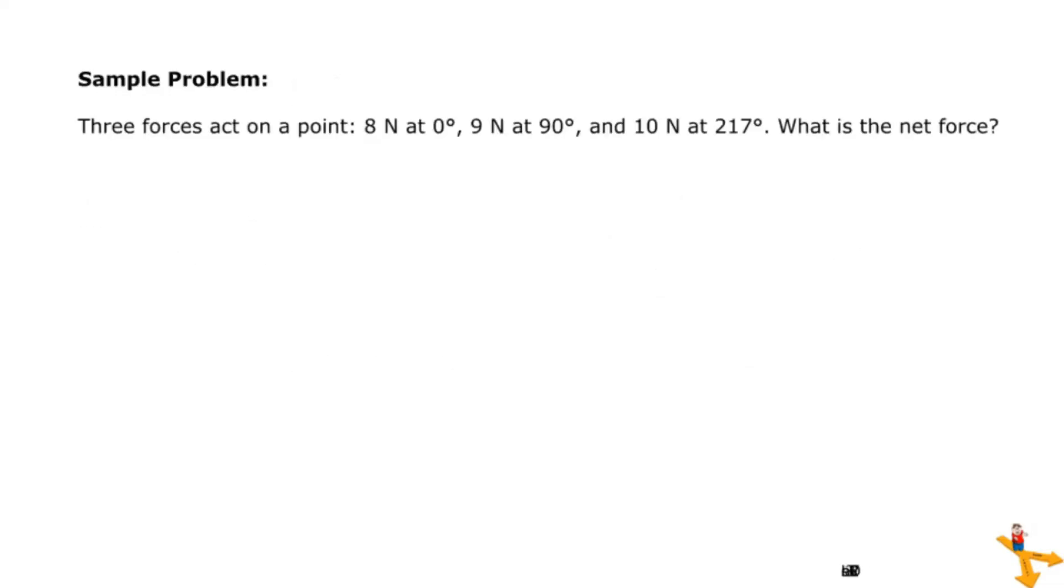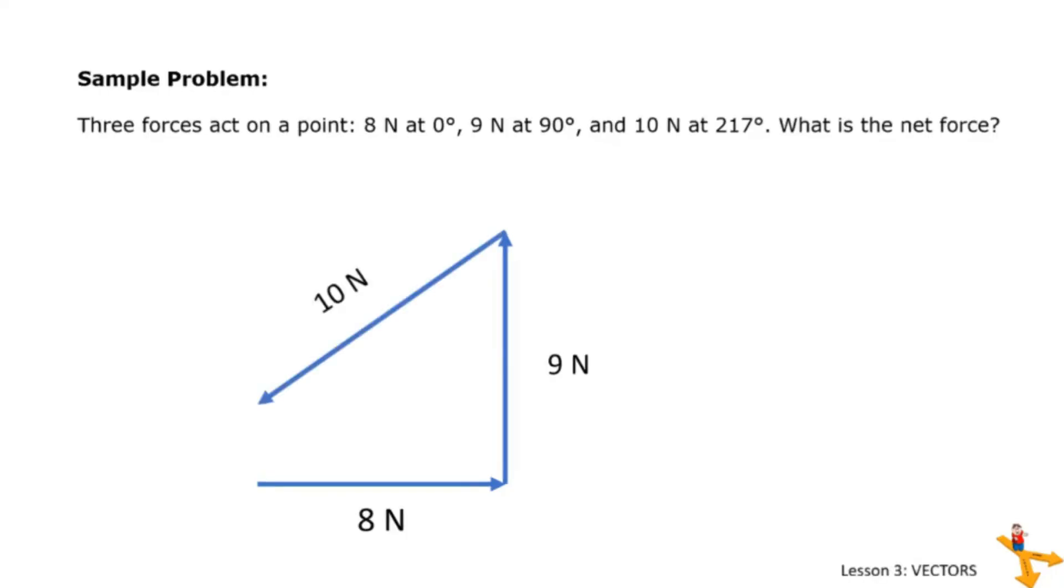Let's try another sample problem. Three forces act on a point: 8 N at 0 degrees, 9 N at 90 degrees, and 10 N at 217 degrees. What is the net force? First let us draw the diagram for this problem so we can easily analyze. For 8 newtons, it is at 0 degrees so we draw it like this. Then let us draw 9 newtons which is directed to 90 degrees. Third, 10 newtons is at 217 degrees. Finally, let us draw the resultant.